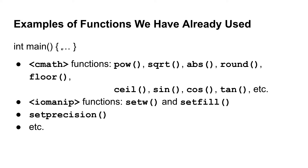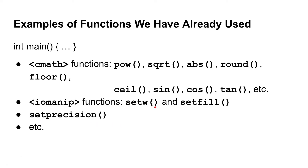But what are some other functions that we have used in this class so far? We've used some from the CMath library, such as pow, square root, absolute value, floating point absolute value. We've done round, floor, ceil, sine, cosine, tangent — a bunch of things from the CMath library. And then we've also used functions from the Iomanip library, such as setw, setfill, and setprecision. These are just things provided to us from C++ that make our lives easier.